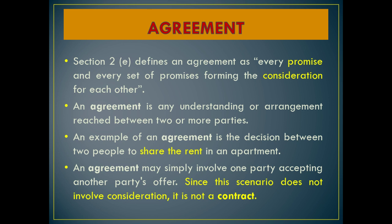An agreement involves two or more parties. For example, A is the seller — what is A's return benefit? Money. B is the buyer — what is B's return benefit? The car or bike. So when there is consideration — a return benefit — we can say that is a contract, that is an agreement.